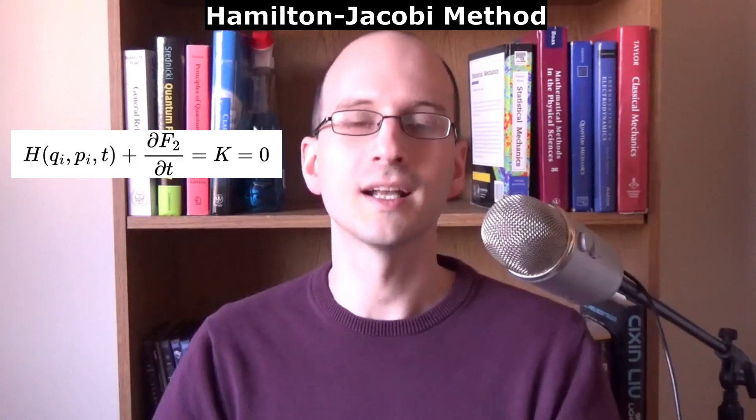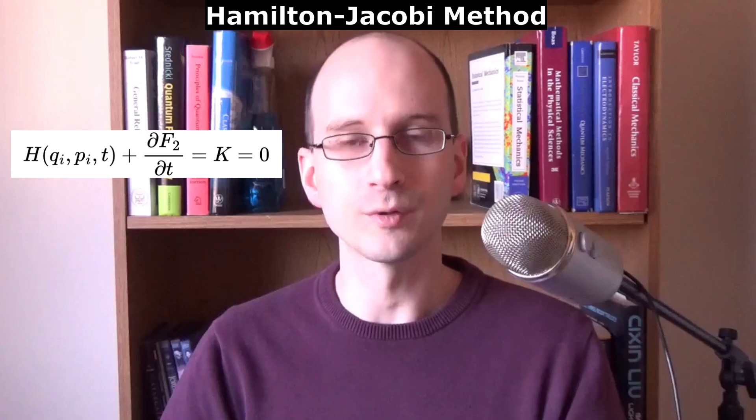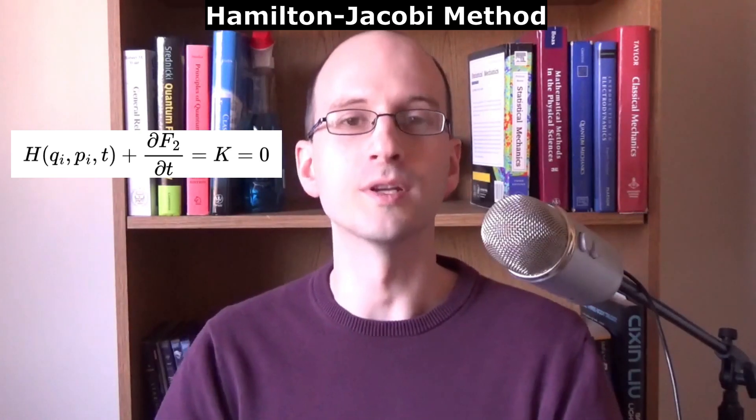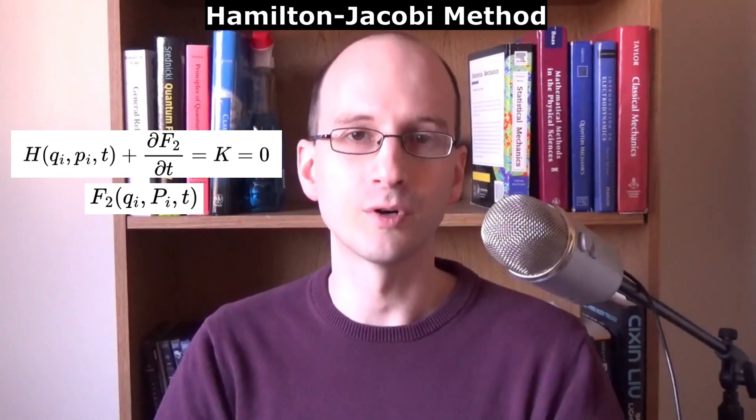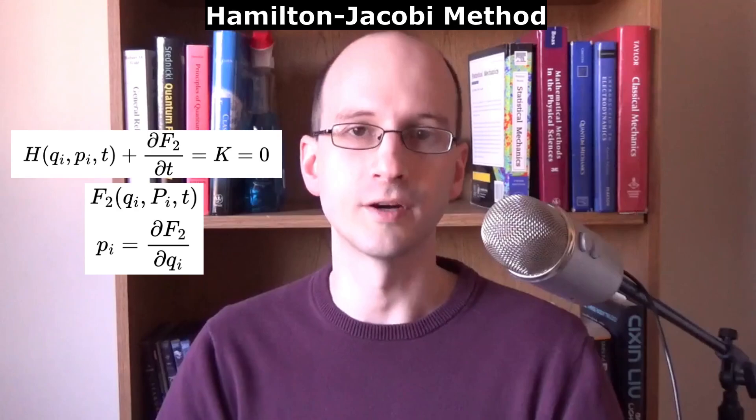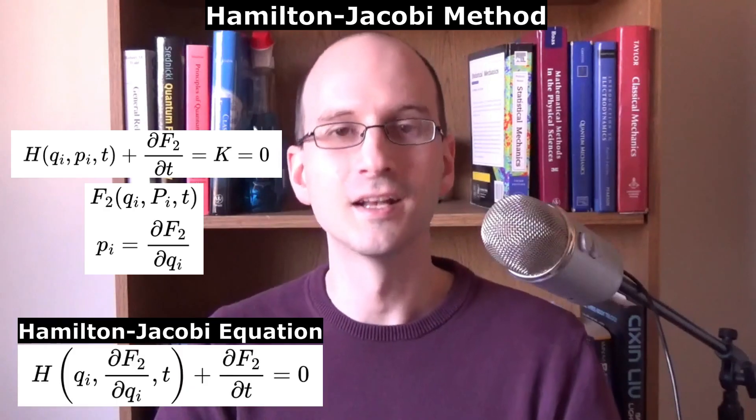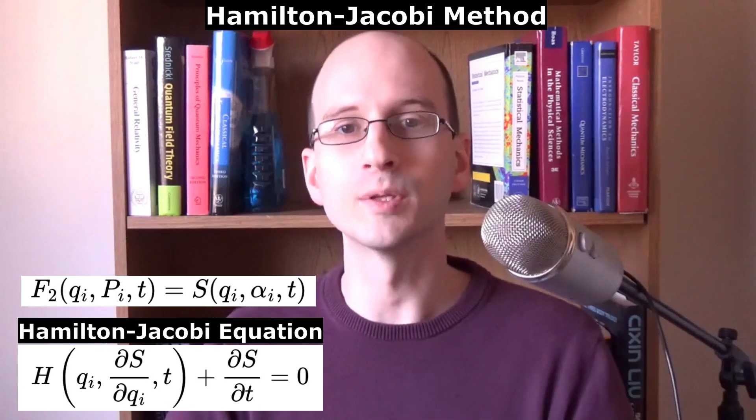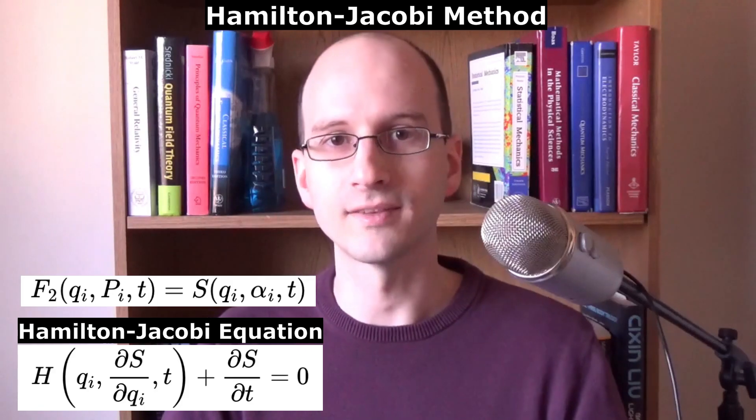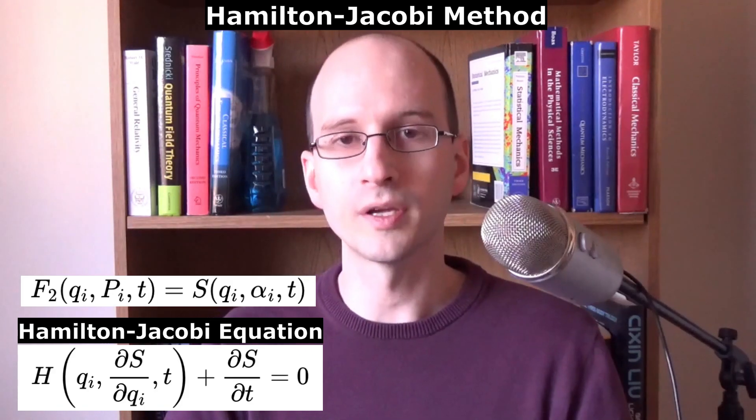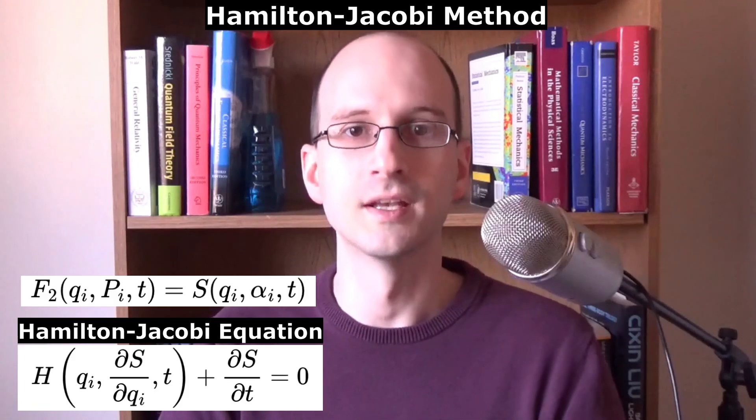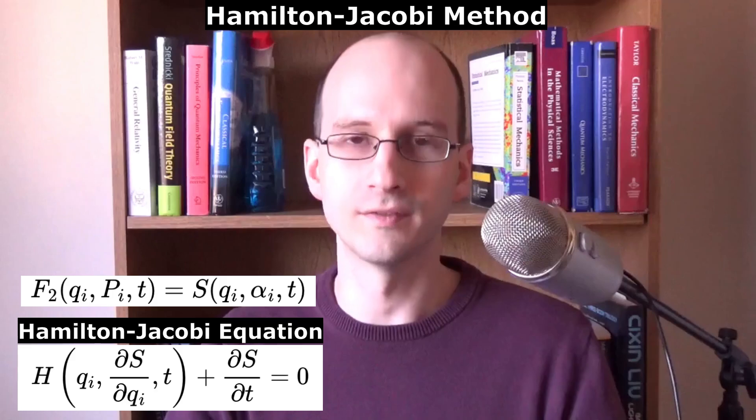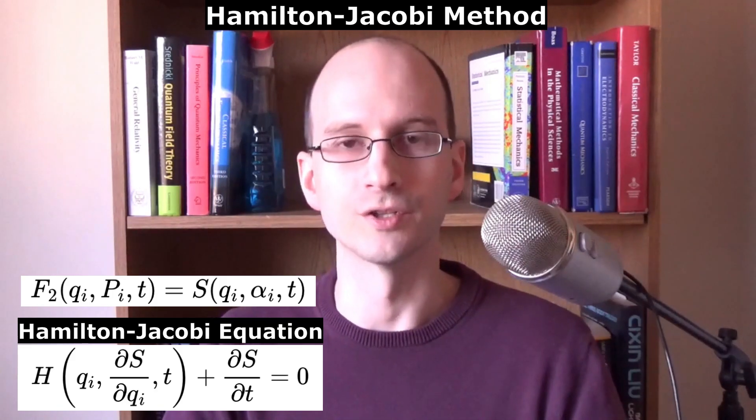We just learned earlier in the video how to transform coordinates. We use a generator function and the transformation equation and set the transformed Hamiltonian to zero. For this particular problem, we use generating function two with variable coordinates and constant momenta. From the generator equations, the variable momenta are df/dq. Putting this into the transformation equation, we get this. The Hamilton-Jacobi equation. It's customary in this process to write f2 as s, called Hamilton's principal function. It turns out to be the indefinite action of the system. To solve the Hamilton-Jacobi equation, we need to know what the Hamiltonian is and substitute in the coordinate derivative of s for the momentum. Then we solve the differential equation for s.